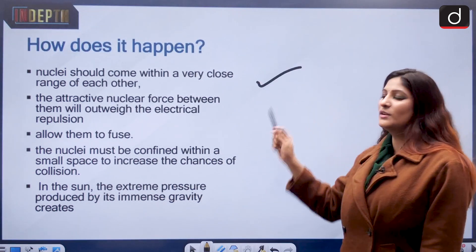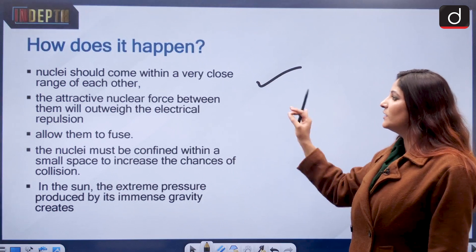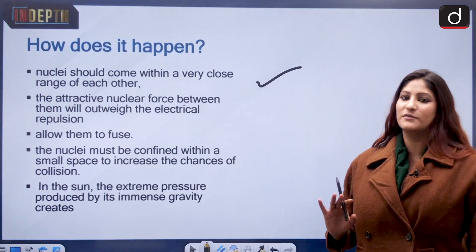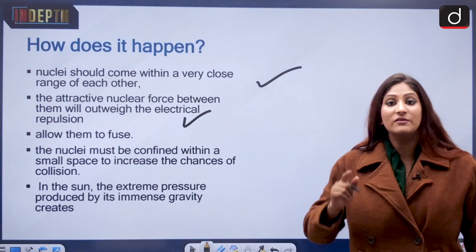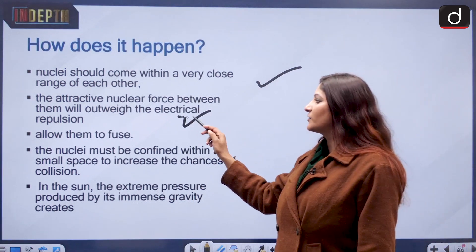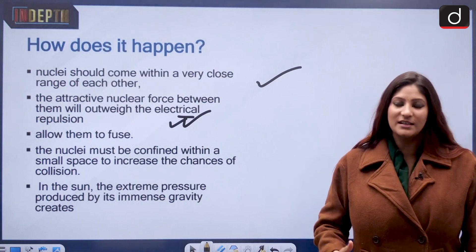How does it happen? Nuclei first of all should come within a very close range of each other. This is the first pre-condition. The attractive nuclear force between them will outweigh their electrical repulsion. That means more attraction is needed and less electrical repulsion.